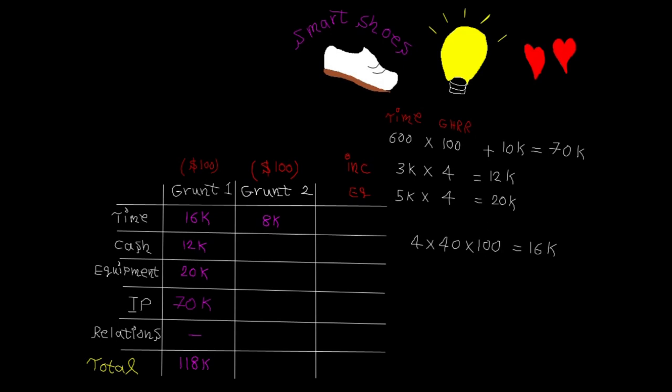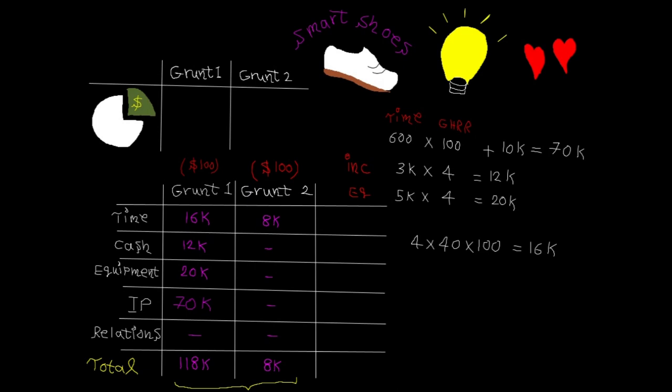My total contribution adds up to 118k and her total is 8k. Now let's see the percentage of equity by the first month for both of us. The total contribution is 126k. So my share is 94% and her share is 6%. Just remember this is not an actual equity. It's a promise to issue equity when the time comes.